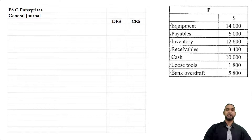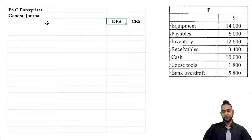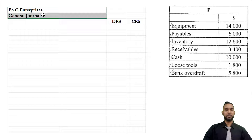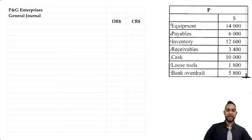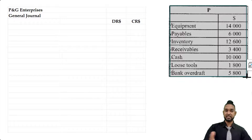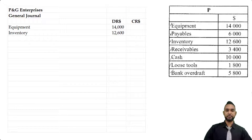When entering items in the general journal, we put debit entries first, followed by credit entries, and the credit entries are indented relative to the debit entries. I didn't put a date column or a folio column — they haven't given us information to populate that column, so I don't usually put it. We'll deal with P's information first. The debit items would be the assets, because assets have debit balances. So we have equipment, inventory, receivables, cash, and loose tools. There's no particular order required; I'm just putting them in order of appearance.